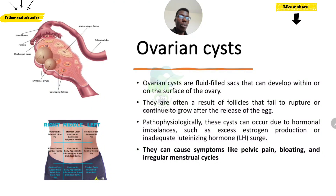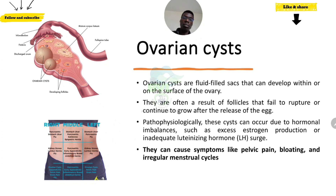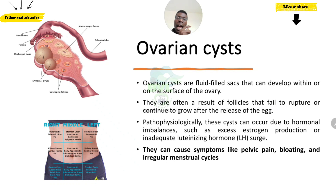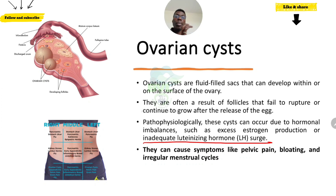The first condition is ovarian cysts. This is quite common and happens when the follicles — as we saw in another video — get filled up with fluid and fail to rupture normally. Normally, around day 14 of every cycle, the follicle releases its egg. But under certain conditions, the follicle will refuse to release its egg and keeps growing. This can happen because there is not enough luteinizing hormone from the pituitary gland, or there is too much estrogen.